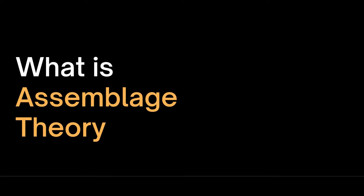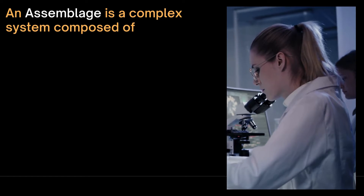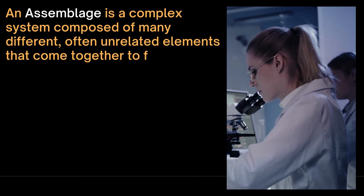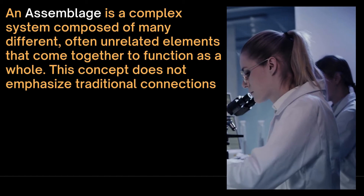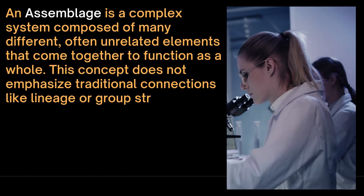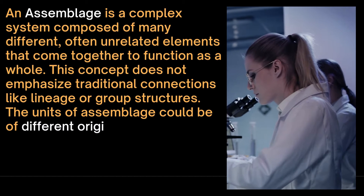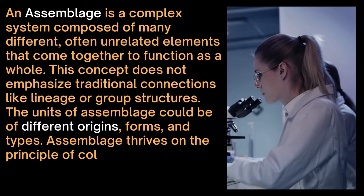Not every collection of things coming together is an assemblage. An assemblage is a complex system composed of many different, often unrelated elements that come together to function as a whole. This concept does not emphasize traditional connections like family lineage or group structures. The units of an assemblage could be of different origins, forms and types. Assemblage thrives on the principle of collaboration and synergy.